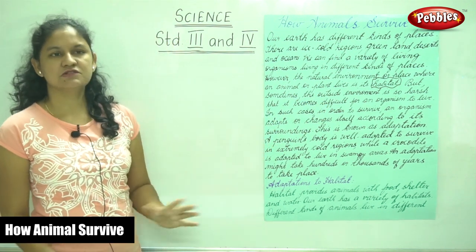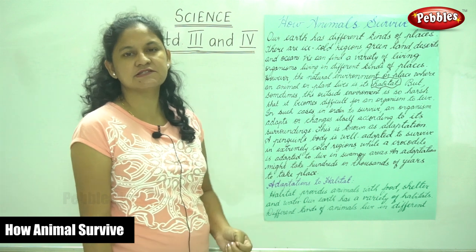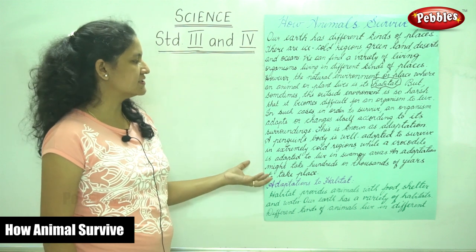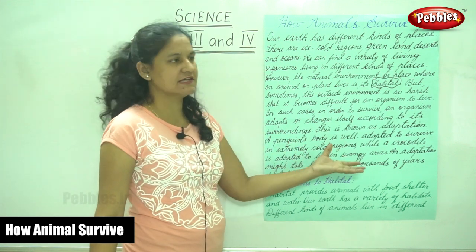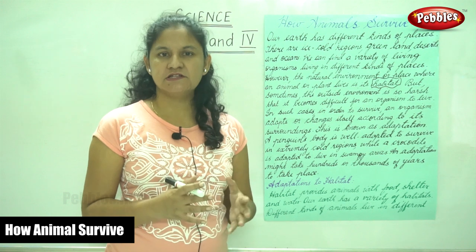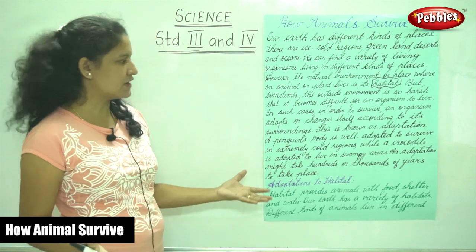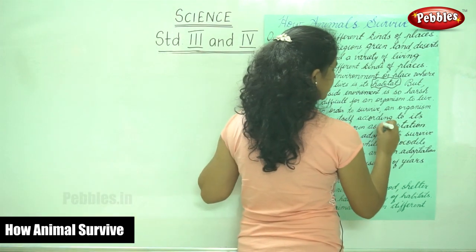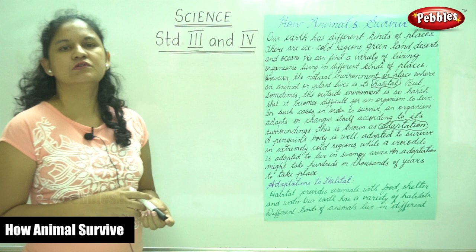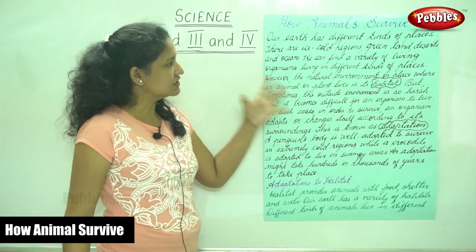But sometimes the outside environment is so harsh that it becomes difficult for an organism to live. In order to survive, an organism adapts or changes itself according to its surroundings. An animal or a plant needs to adjust or adapt to the environment. This is known as adaptation. Adaptation is the process wherein an organism adapts or changes itself according to its surroundings.